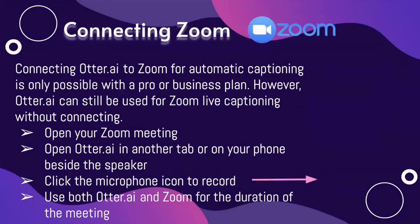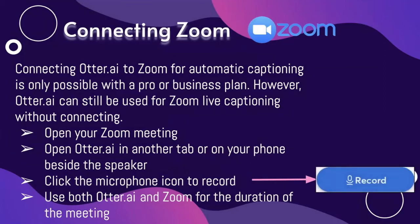Connecting Otter.ai to Zoom for automatic captioning is only possible with a Pro or Business plan. However, Otter.ai can still be used for Zoom live captioning without connecting. Open your Zoom meeting, open Otter.ai in another tab or on your phone, click the microphone icon to record beside the speaker, and use both Otter.ai and Zoom for the duration of the meeting.